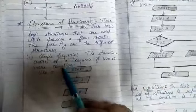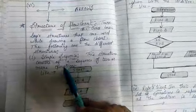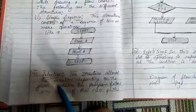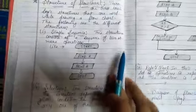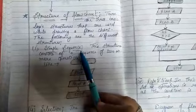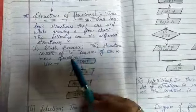First structure is simple sequence. Second structure is selection, and third is repetition. First one is simple sequence.